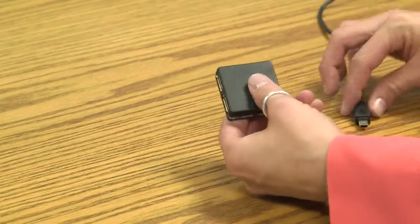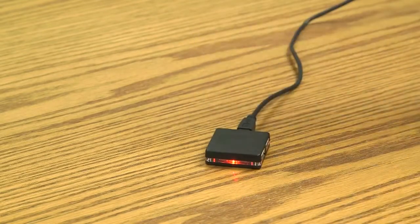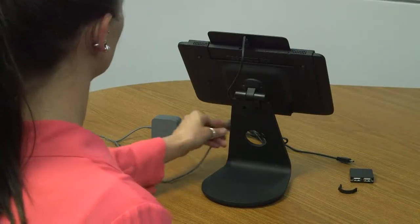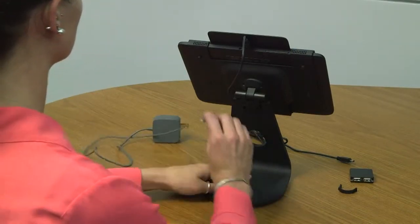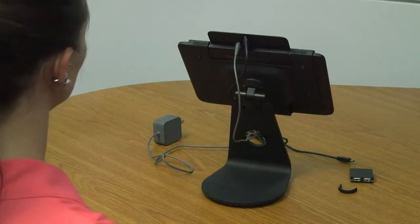Then, connect the cable's mini-USB connector to the mini-USB port on the USB hub. Run the tablet power cord through the circular hole in the stand. Reconnect the power cord to the power connector on the bottom of the tablet.